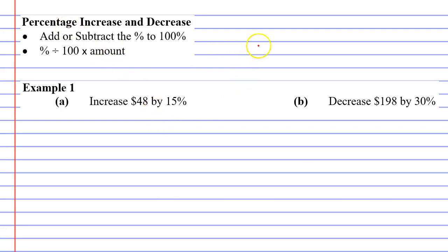The old method says use the formula percentage divide 100 and multiply this by the amount. So in this case you would go, my percentage is 15. I'm going to divide that by 100 and my amount is $48.